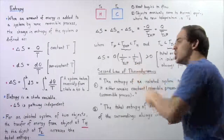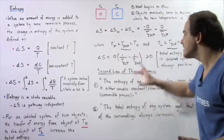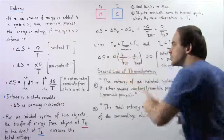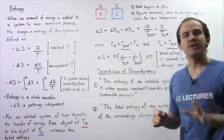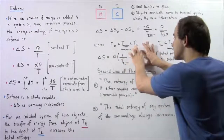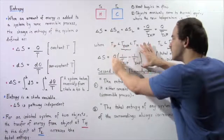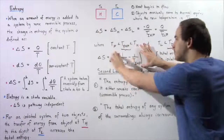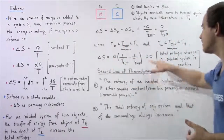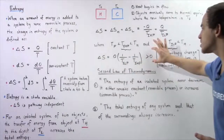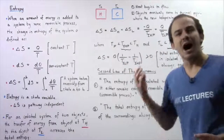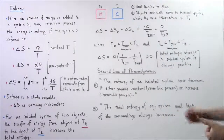That means this fraction will be less than the other fraction, so the difference of these two fractions will always be positive. Because this difference is positive, Q multiplied by a positive quantity will always be positive. Therefore, ΔS must always be positive for an isolated system.